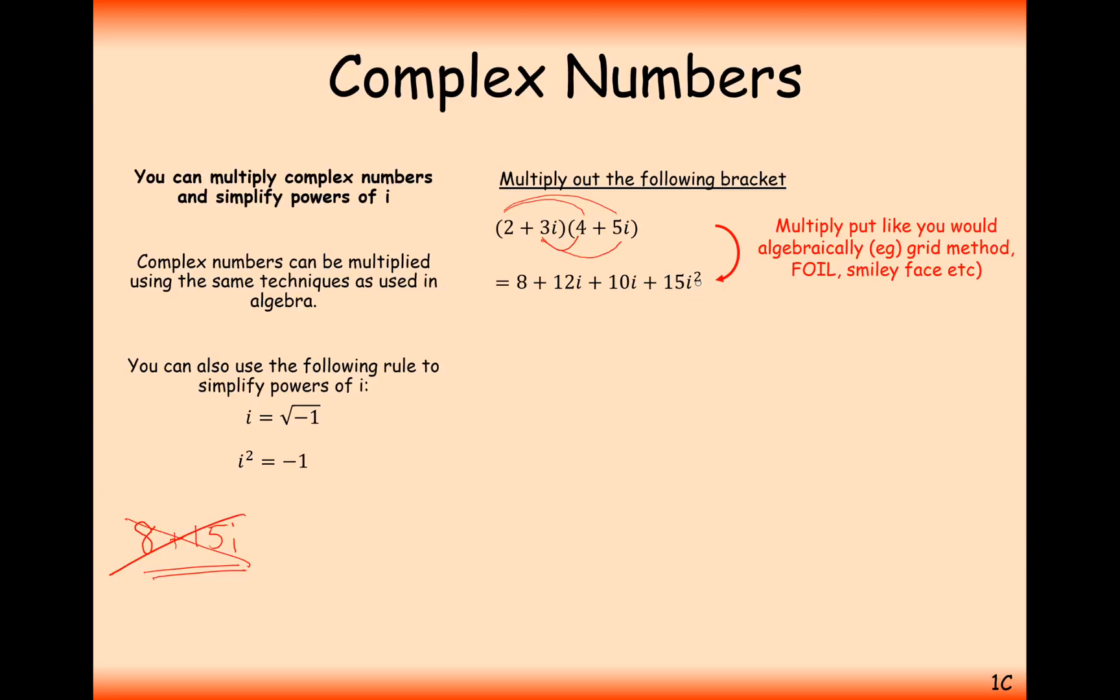which will give you 15i squared. Now don't forget that i squared, i times i does give you i squared, and what we can do with that is simplify it using a minus 1 there instead. So substitute in i squared with a minus 1, and you can also group together your 12i and your 10i. And then effectively now this just becomes a minus 15, so 8 minus 15 is minus 7. So your final answer here is minus 7 plus 22i.